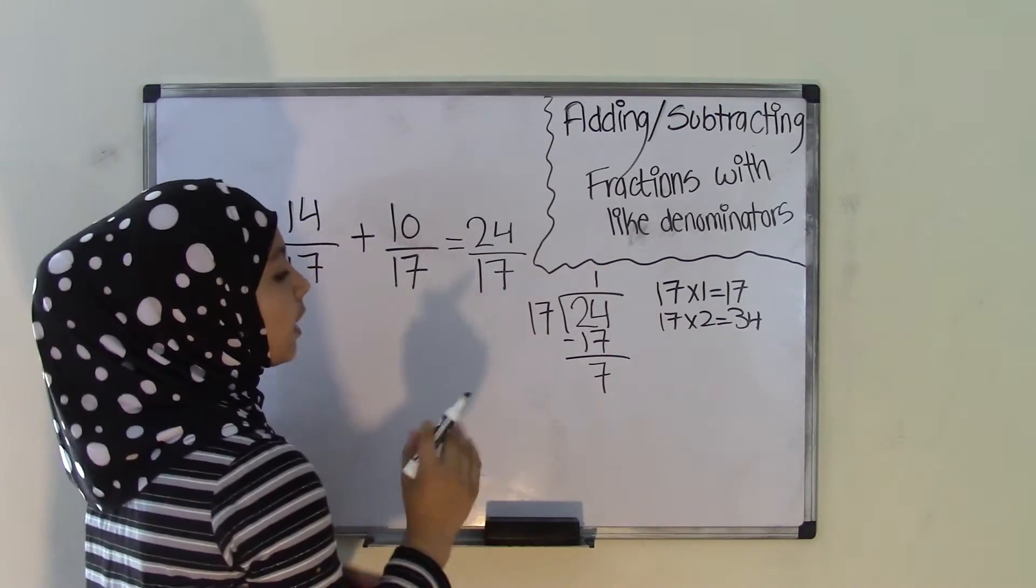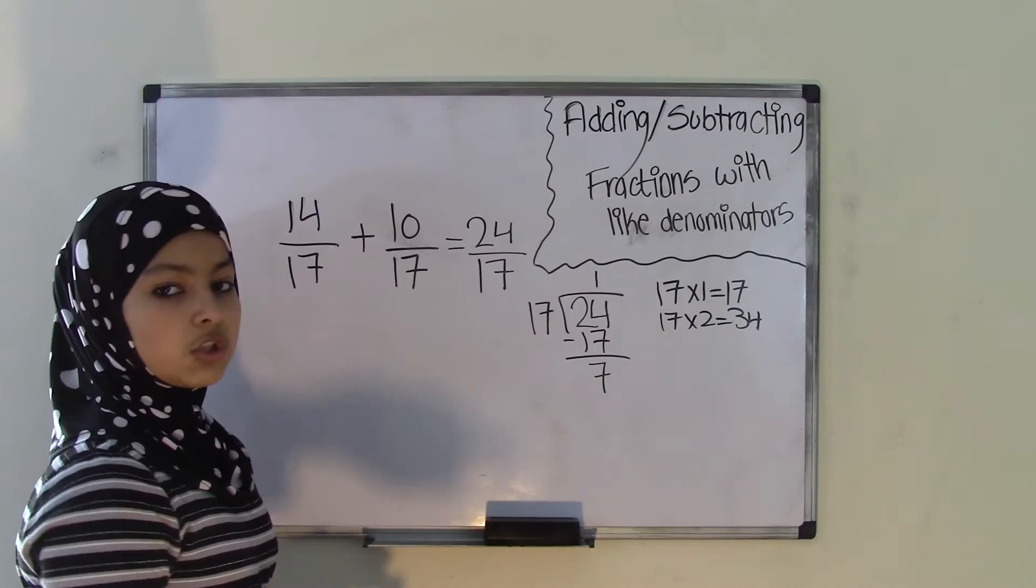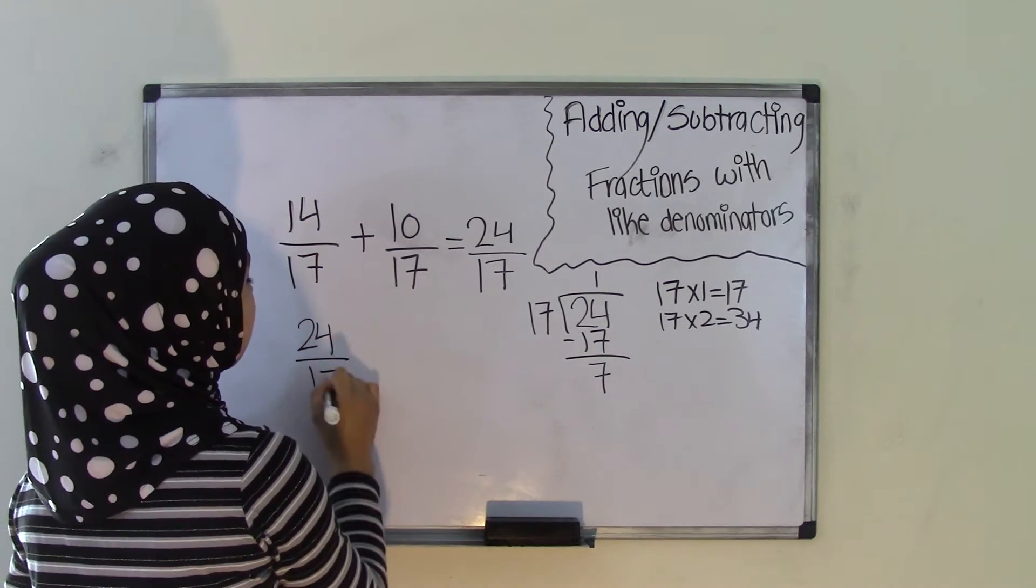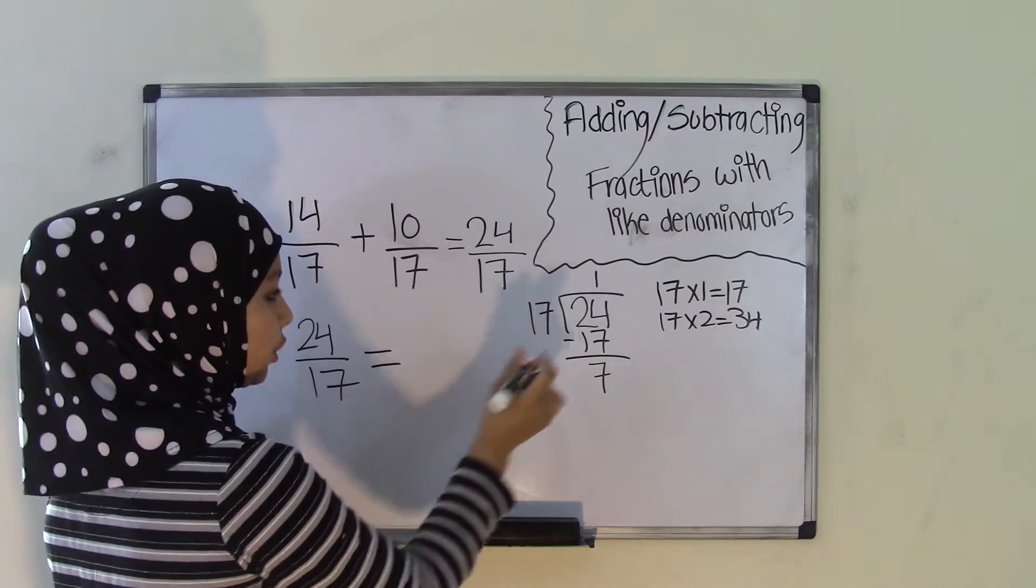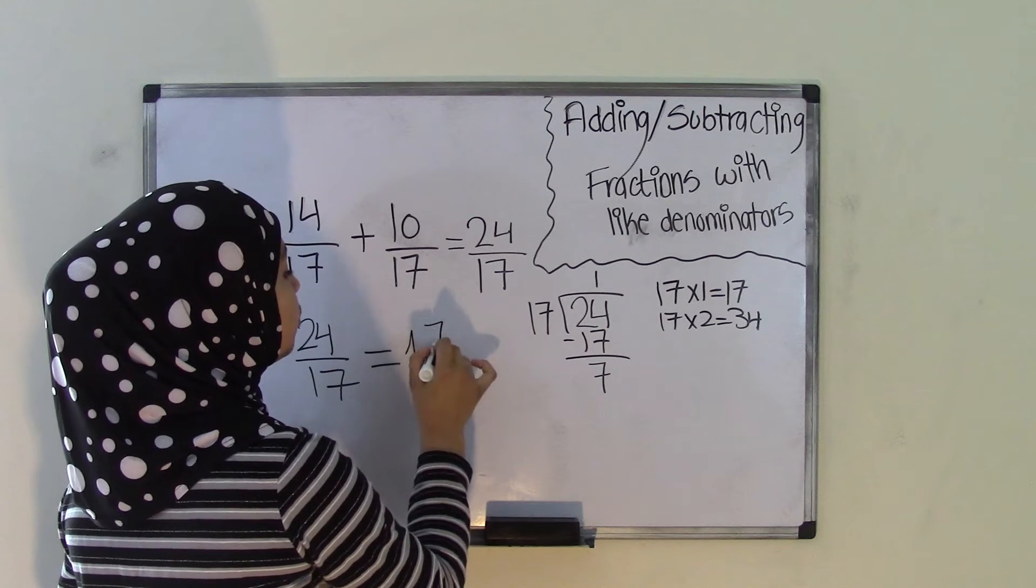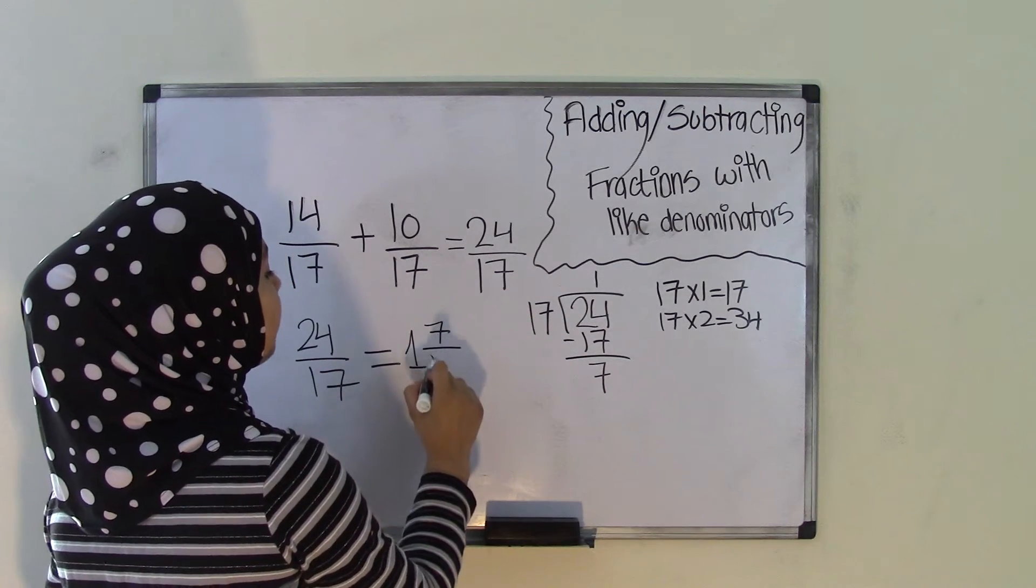So now you have already solved your problem. In order to write this as a mixed number, what you're going to do is write 24 over 17 equals your quotient, which is 1 in this case, is going to be your whole number. Your remainder, which is 7, is going to become your numerator.